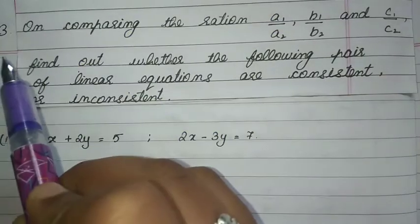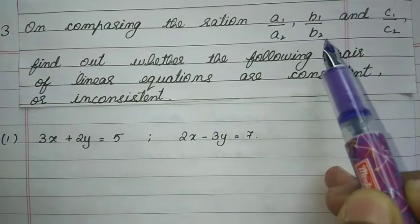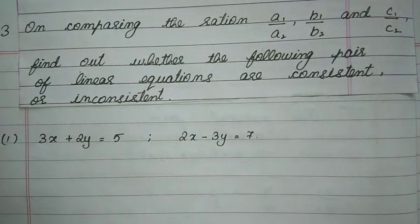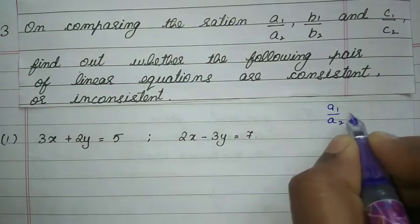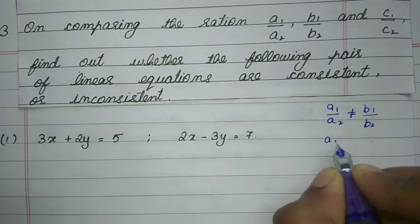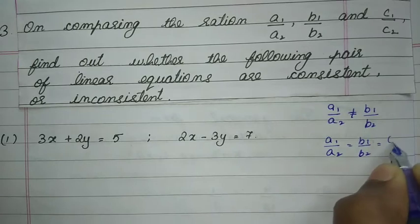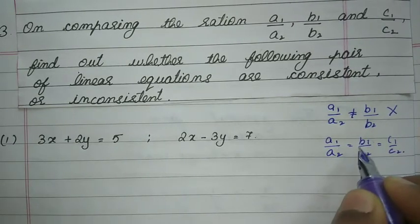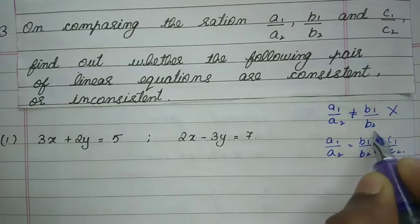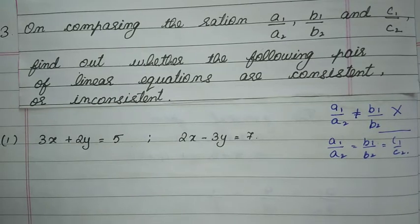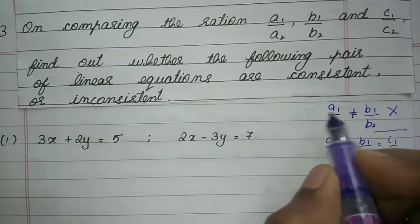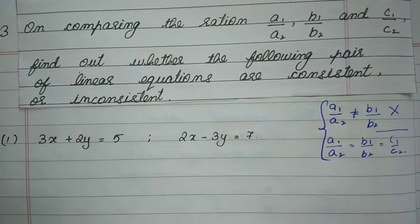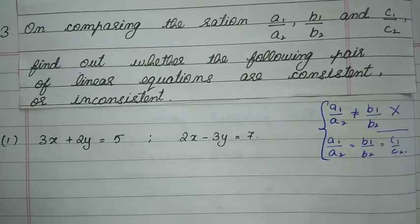Question 3: On comparing the ratios a1/a2, b1/b2, and c1/c2, find out whether the following pairs of linear equations are consistent or inconsistent. Consistent means either a1/a2 not equal to b1/b2 (intersecting, one solution) or a1/a2 equals b1/b2 equals c1/c2 (coincident, infinitely many solutions). If neither condition is satisfied — that is a1/a2 equals b1/b2 but not c1/c2 — then it is inconsistent.